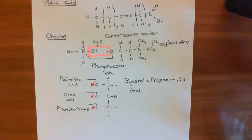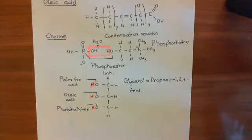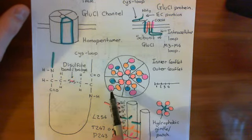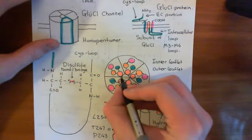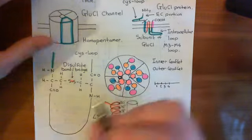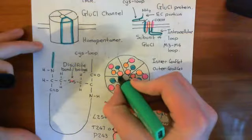POPC is also an agonist for these GluCl channels — it will bind to these GluCl channels and cause them to open. Let me show you where it binds. Looking at the structure with the four membrane-spanning alpha helices, POPC binds in between two neighbouring M2 alpha helices.